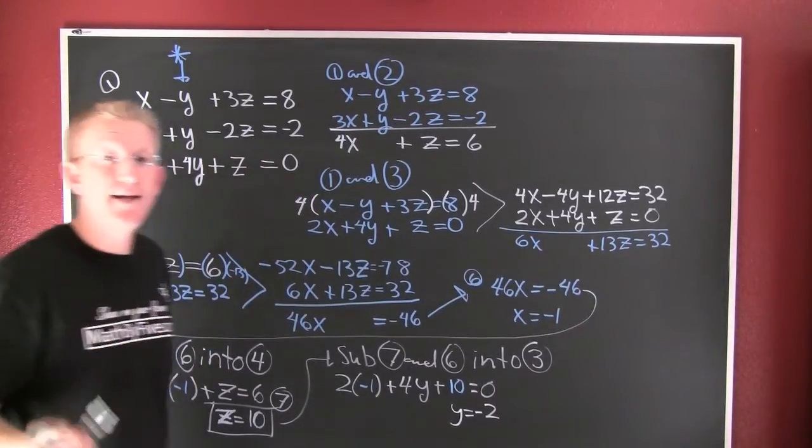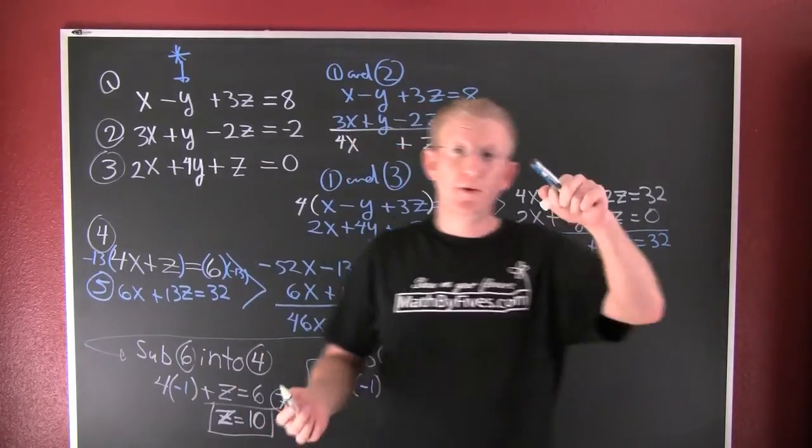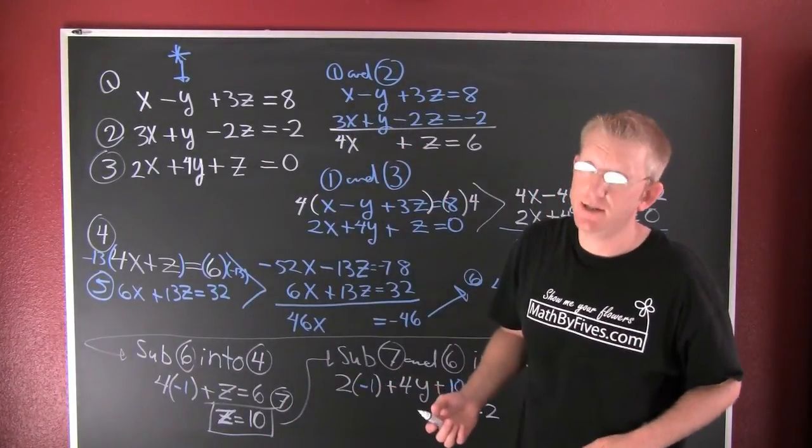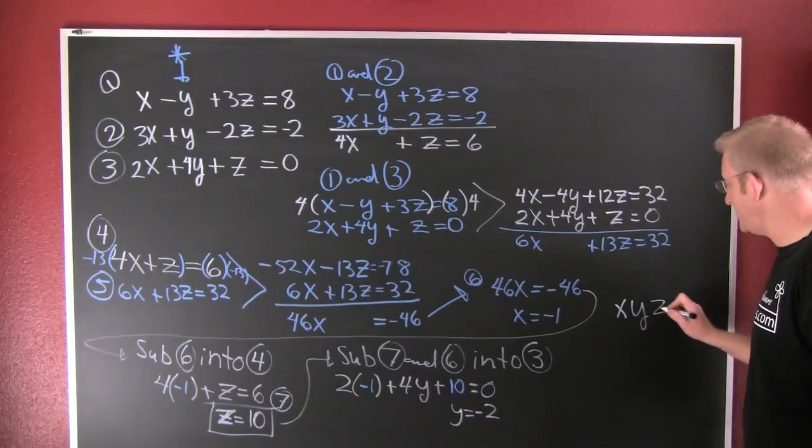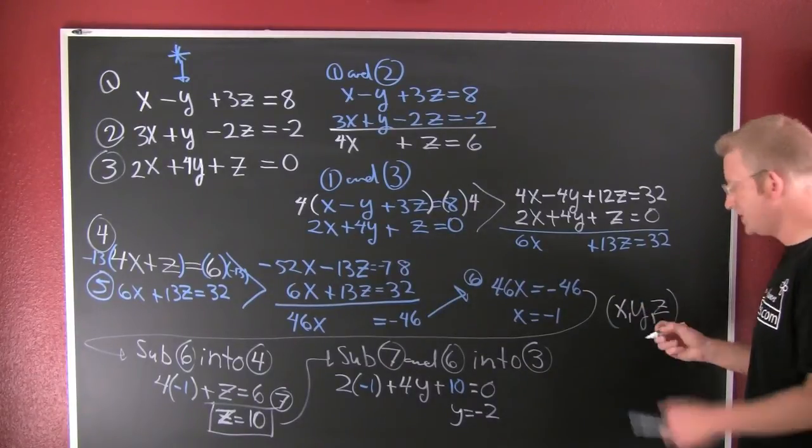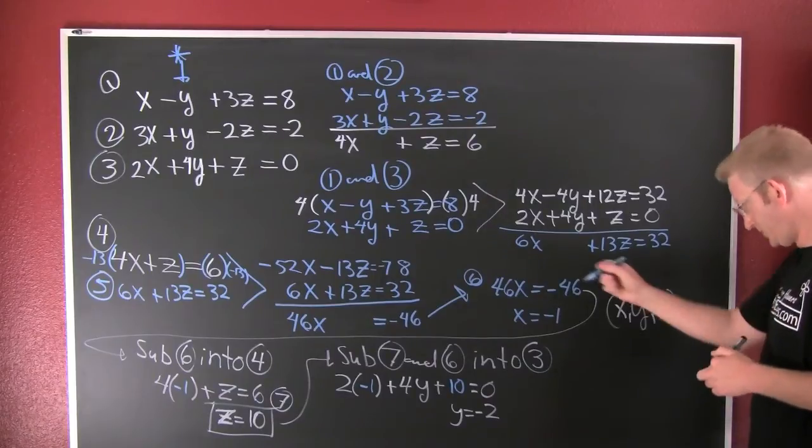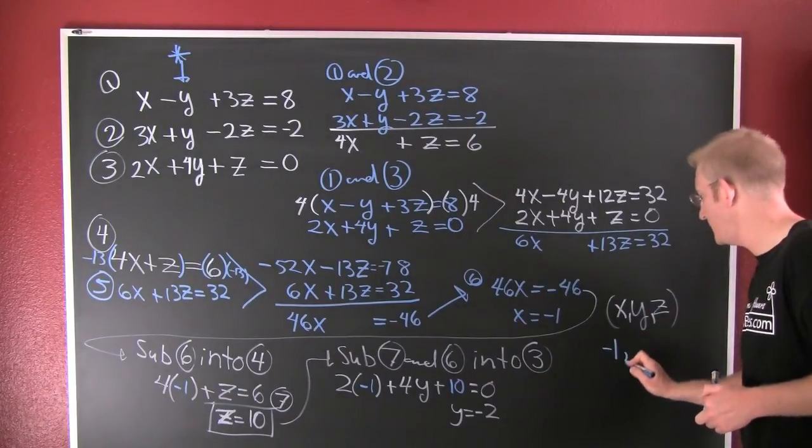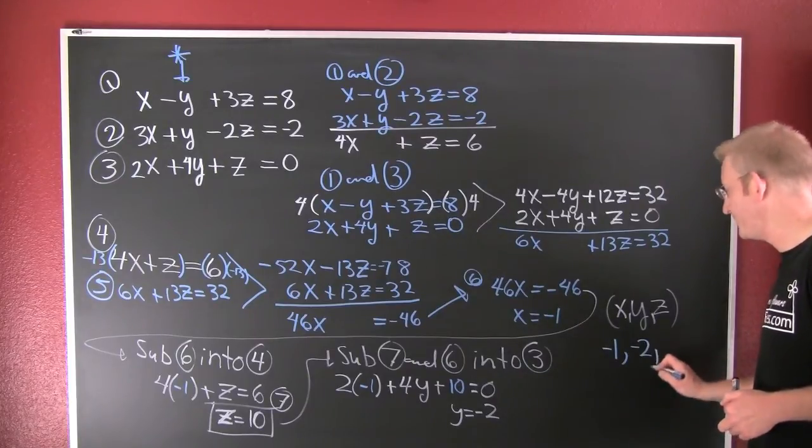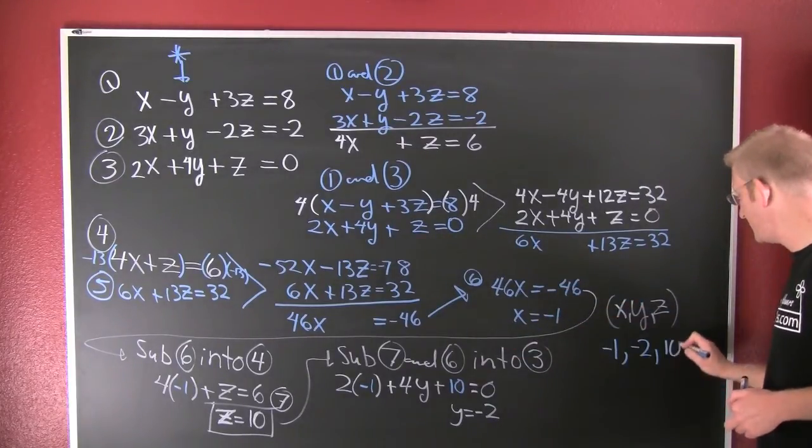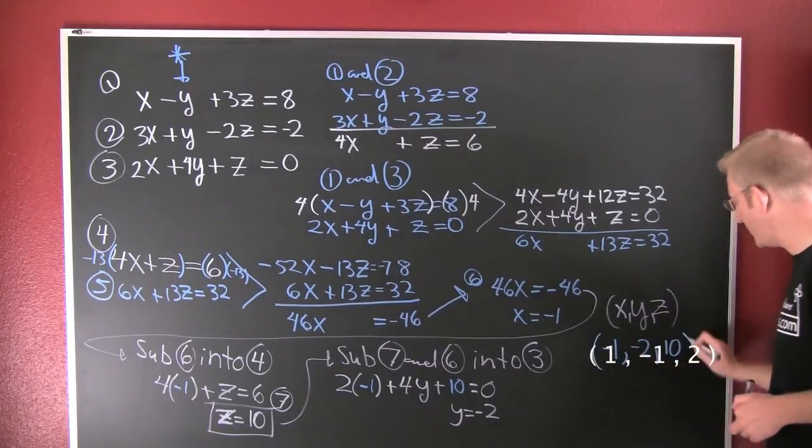So now I have an X, a Y, and a Z. And what's my point? My point is the solution to a system is a point, and my point is of the form X, Y, Z. So what was my X value? Minus 1. And my Y value? Minus 2. And my Z value? 10.